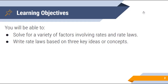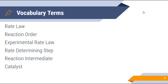Let's talk a little bit about the learning objectives for today. Hopefully by the end of this video, you will be able to solve a variety of factors involving reaction rates and rate laws, and you should also be able to write rate laws based on three key ideas or concepts. We have quite a few vocabulary terms: rate law, reaction order, experimental rate law, rate determining step, reaction intermediate, and catalyst.